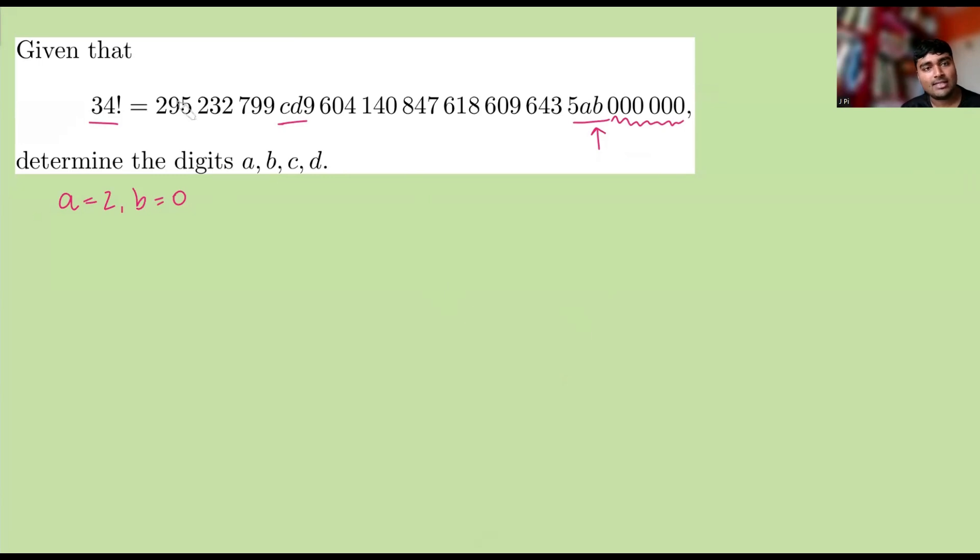So if I add up these digits here, so 2 plus 9 plus 5 and so on, all the way up to the 0, all the way over here, what do we get? Well, we get 139.